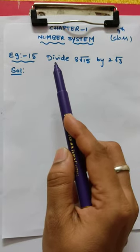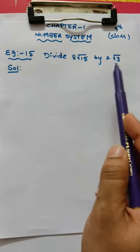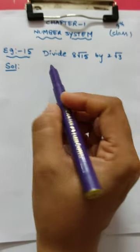Question: divide 8 root 15 by 2 root 3. How to divide?